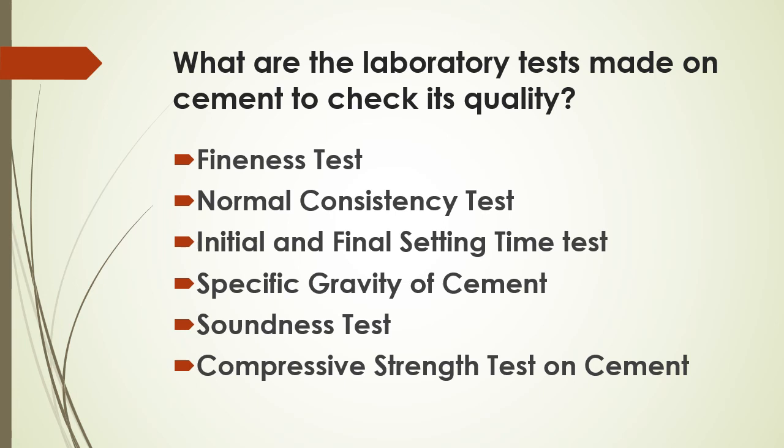Later, we determine the specific gravity of cement. The liquid used to find the specific gravity of cement is kerosene. After that, we conduct the soundness test, which determines whether the cement expands after construction. Due to certain properties, cement may shrink or expand, and to assess that we use Le Chatelier's apparatus.